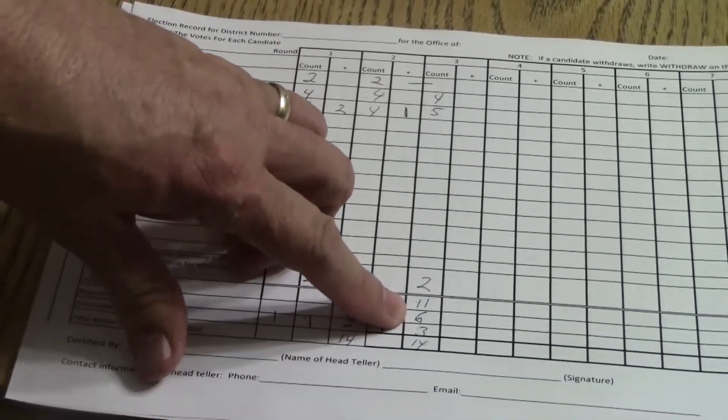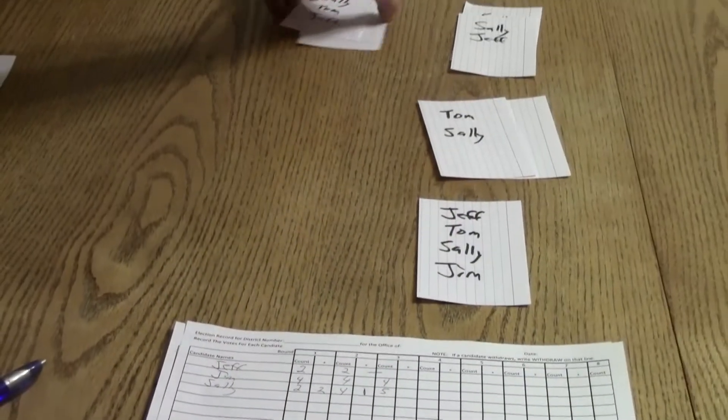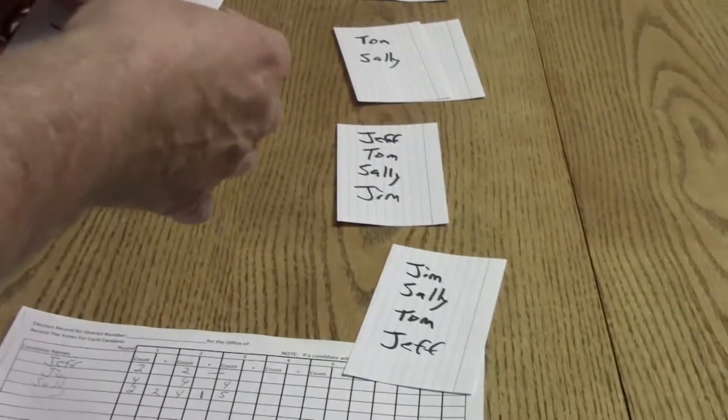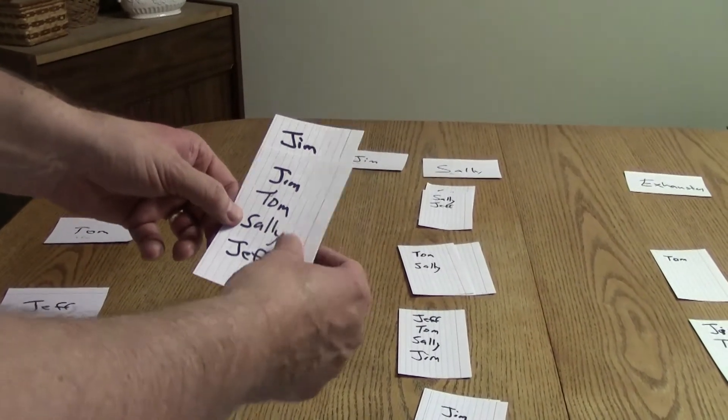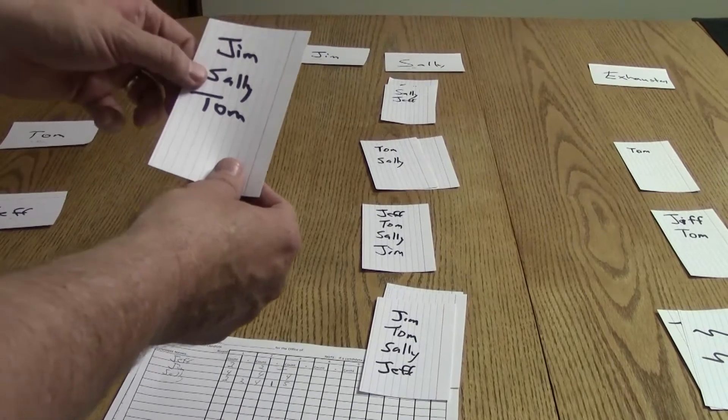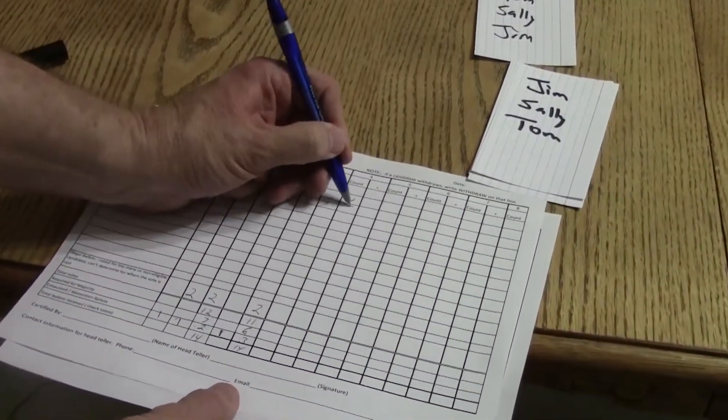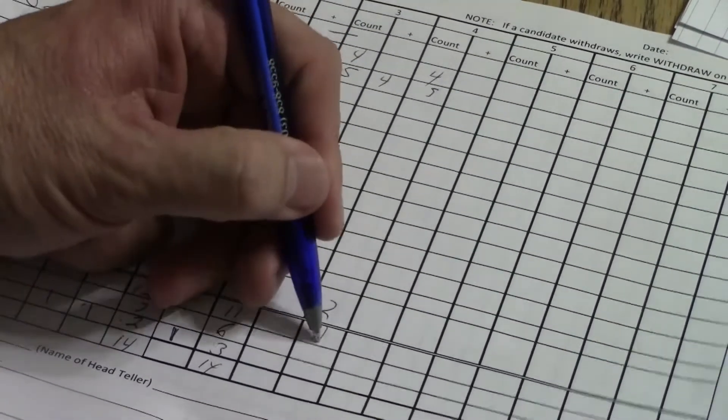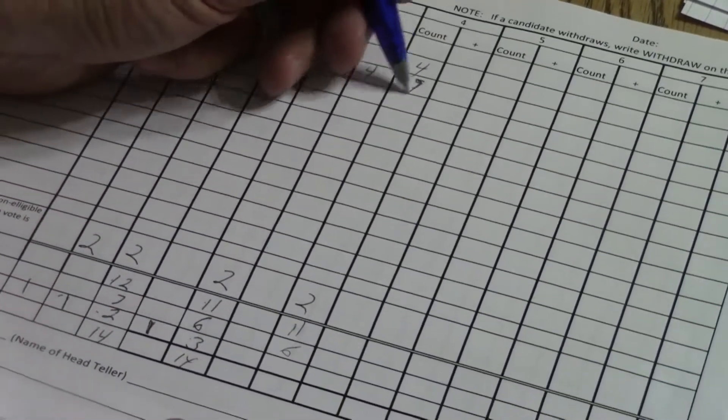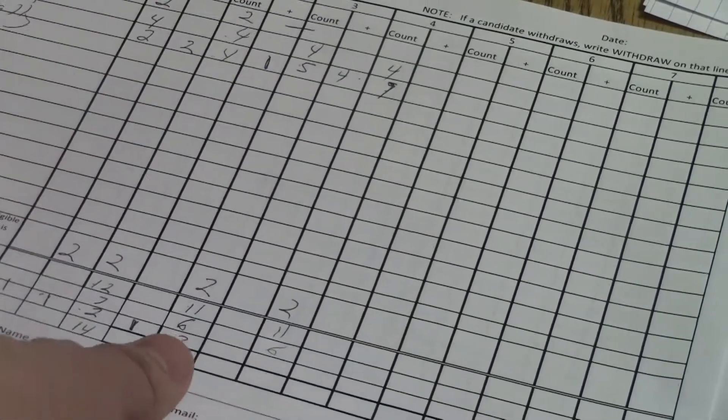So now we look at six are required as the majority to win. Sally only has five. So we're going to take Jim's votes and divide those out. After Jim is Sally, another vote for Sally. Jim and Tom have been eliminated, so the next available vote is for Sally. And then his vote is also for Sally. So we have four additional votes for Sally, and that brings across as nine. We still have the two that are exhausted, and that gives us still 11 votes of which six are required. So now Sally has nine votes, and only six are required, so Sally is declared the winner.